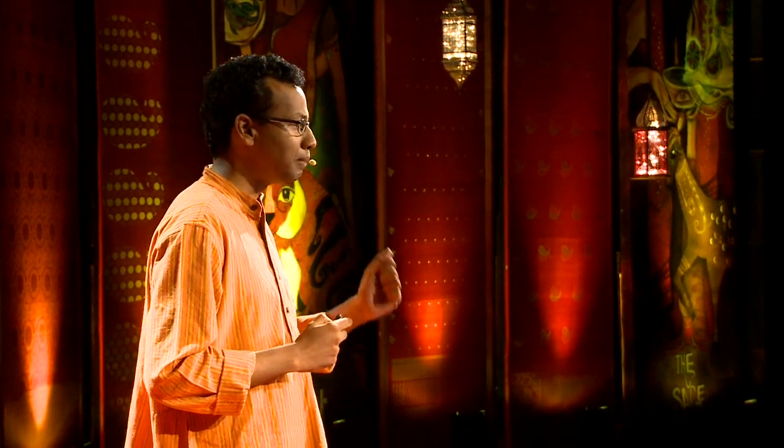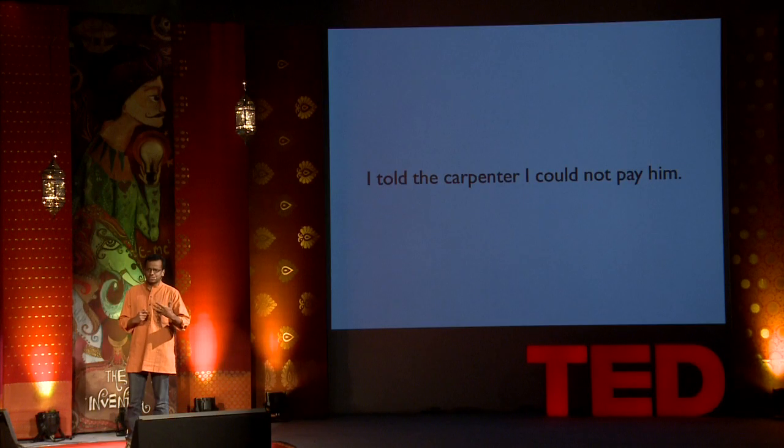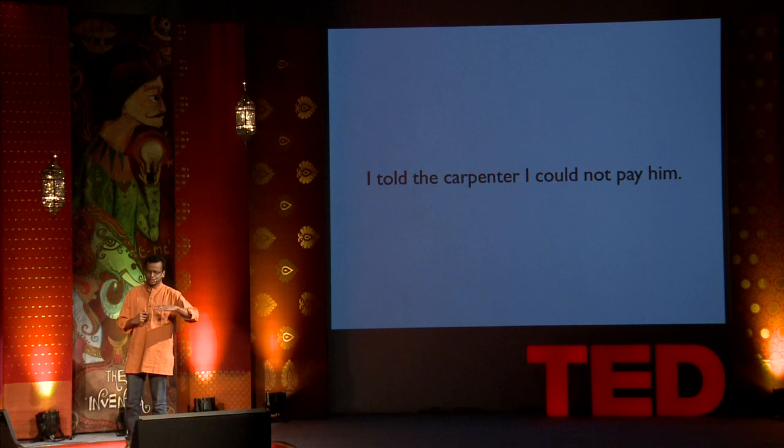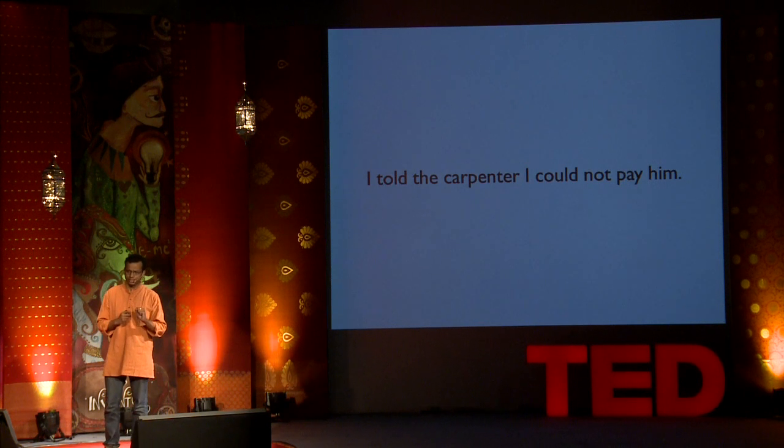It's a tough problem. And I've solved this problem to a large degree by looking at the way autistic children communicate today. Let's take this example. I told the carpenter I could not pay him. Let's say an autistic child wants to communicate this. I've seen how autistic children are able to communicate some amount of meaning from this sentence. They'd start with just one word. For example, the word, tell.